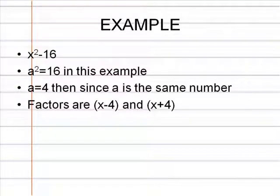The first thing you want to do is find a positive number that when multiplied with itself will give you 16. So our a squared equals 16, which would mean our a will equal 4. Therefore, the two factors for this polynomial are x minus 4 and x plus 4.